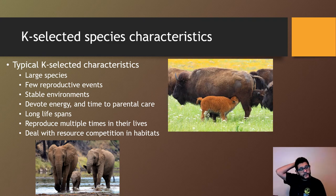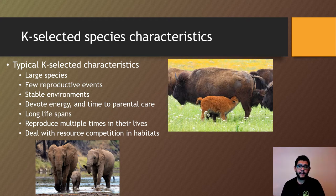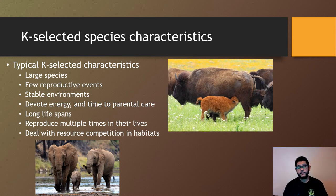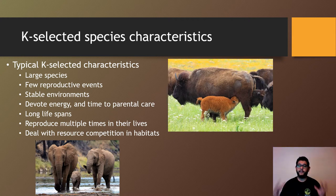Some characteristics of K-selected species: they tend to be pretty large species. Large mammals are a common example — things like buffalo, bison, and elephants. They don't have very frequent reproductive events, they live in pretty stable environments where things aren't totally changing all the time, and they devote most of their energy to parental care. For example, elephants are pregnant for two years and spend their entire lives in family pods. They tend to have long lifespans.